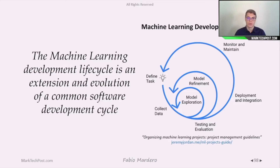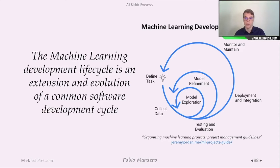With machine learning comes a new development life cycle, which is an extension and evolution of a common software development cycle. We start by defining the task, then collect data or use what is already available in the company. We do model exploration and model refinement, then test and evaluate the model. We deploy it and integrate it into the company's ecosystem, then monitor and maintain the machine learning model using new data that is collected.